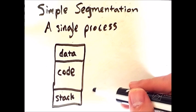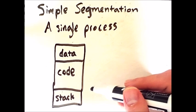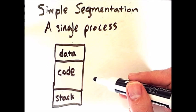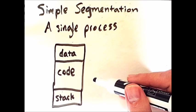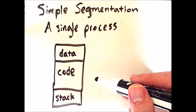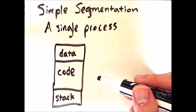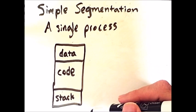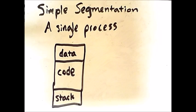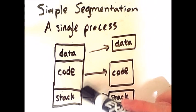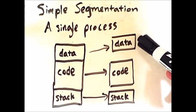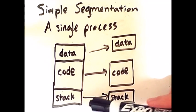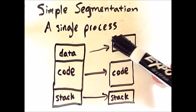More complex programs will have even more segments. For example, in an object-oriented program, you will often have many different code segments across different objects. However many segments you have, the idea behind segmentation is to break the process up into separate segments. Now that the segments of a process have been split up, they can be placed in different regions of memory. In other words, the entire process no longer has to be contiguous within memory.